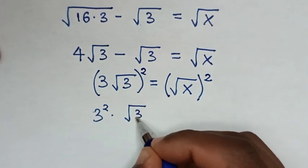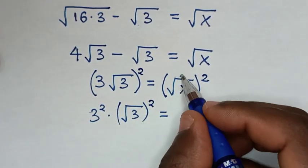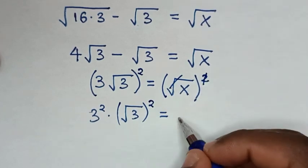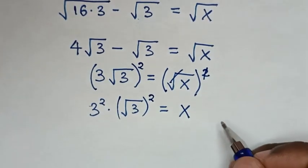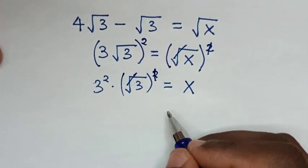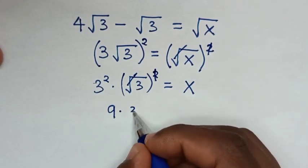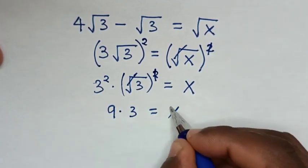Square root of 3 bracket squared - the square root will cancel the square, so it becomes x. 3 squared is 9 times 3, which equals x.